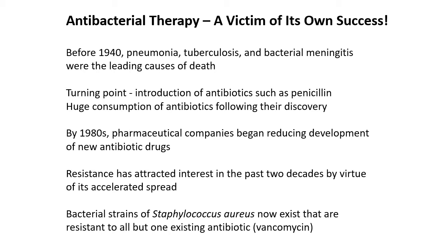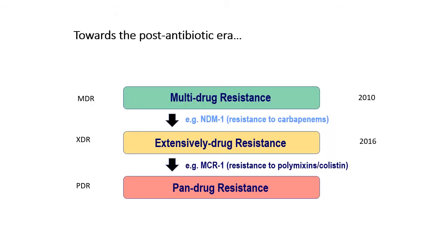This potentially could be a huge crisis of the next 30 years. Epidemiologists look at the so-called MDR to XDR to PDR spectrum, towards the post-antibiotic era. MDR stands for multidrug resistance — bacteria resistant to a large number of different drugs, but normally some antibiotics remain effective. XDR and then pan-drug resistance is really where we don't want to be. An example of multidrug resistance is the NDM1 protein, which confers resistance to carbapenems. MCR1 confers resistance to polymyxin, specifically colistin. NDM1 resistance was first seen in 2010 and MCR1 in 2016.